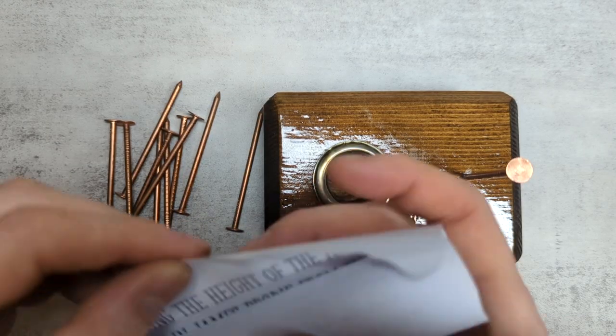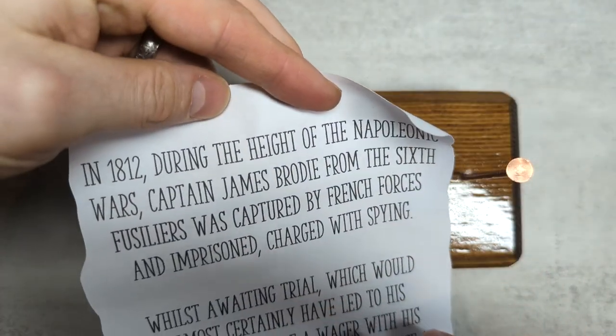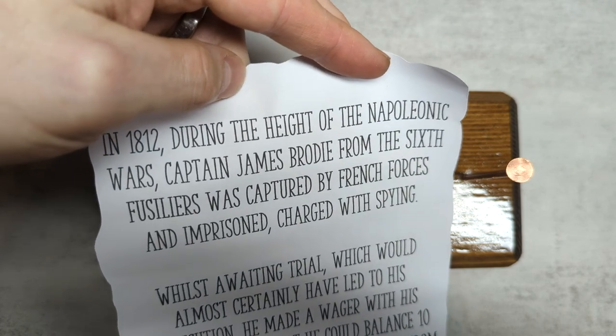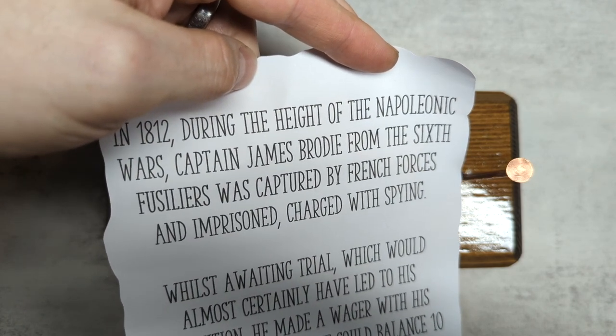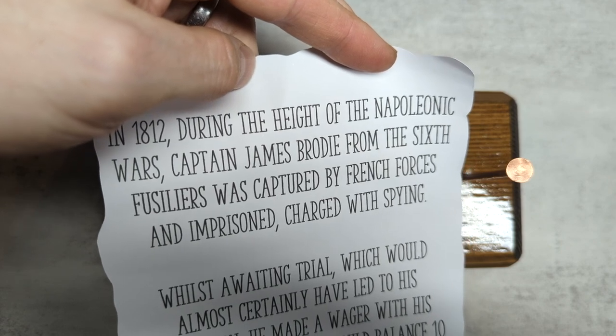They include with it the story of how this came about. In 1812, during the height of the Napoleonic Wars, Captain James Brodie from the 6th Fusiliers was captured by French forces and imprisoned, charged with spying.